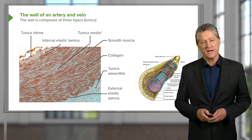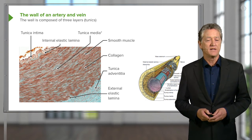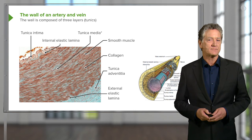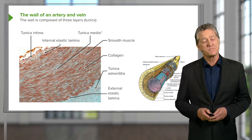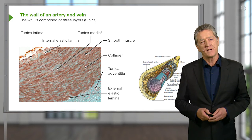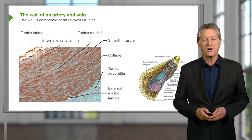And the other stain, the greeny colored stain, is the collagen. So the important thing to understand here is that the tunica media is made up of a combination of smooth muscle and collagen.